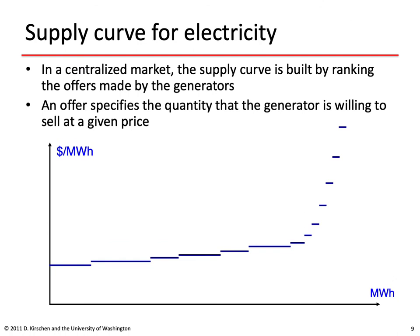The supply curves shown previously are somewhat idealized. In a centralized market, the supply curve is built by ranking the offers made by generators, resulting in the kind of staircase function shown here.